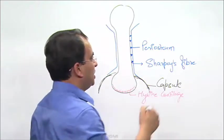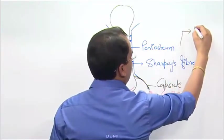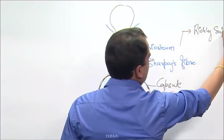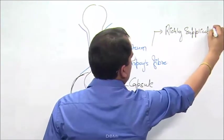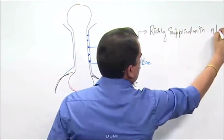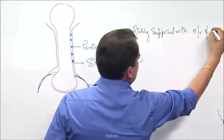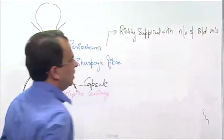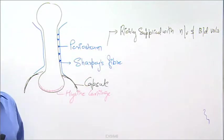Periosteum is very richly supplied with the nerves and blood vessels. It is very richly supplied by the nerves and the blood vessels.